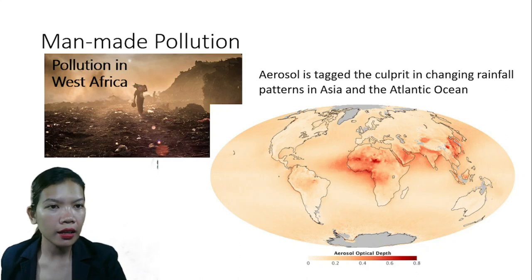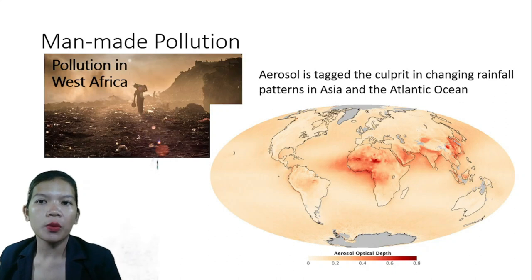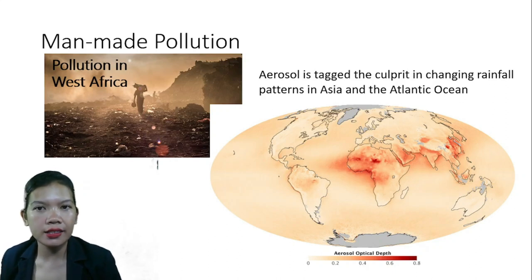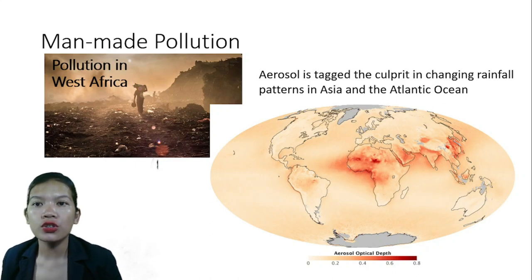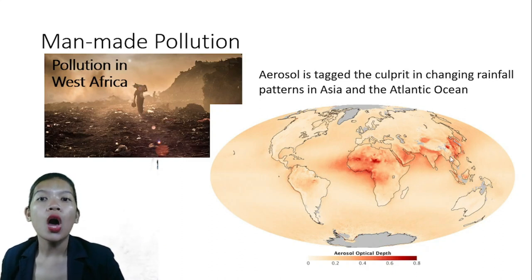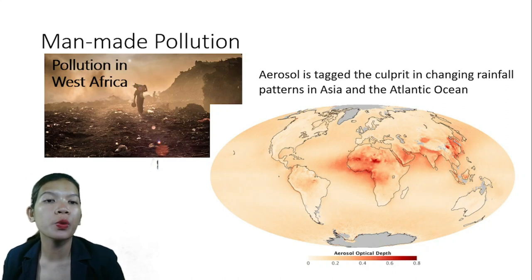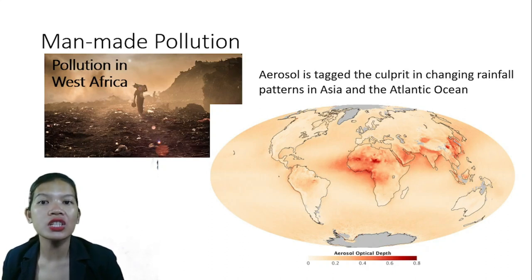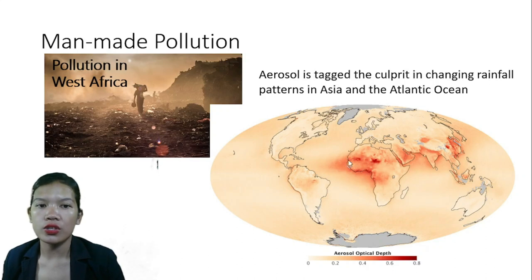Another man-made pollution concern involves aerosols. In West Africa, the atmospheric circulation system controls wind and rainfall across huge swaths of the region. The Asian monsoon has become a transport of polluted air into the stratosphere, and scientists are now linking Pacific storms to the spread of pollution in Asia. Aerosol is tagged as a culprit in changing rainfall patterns in Asia and in the Atlantic Ocean.